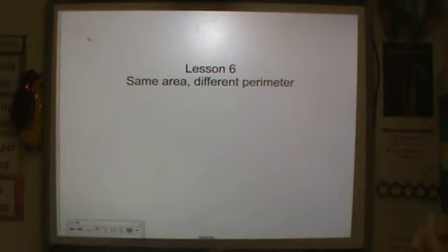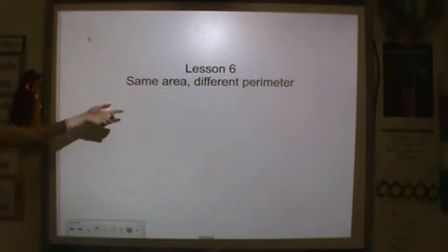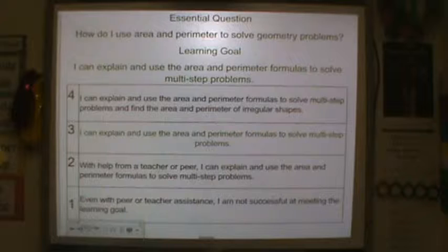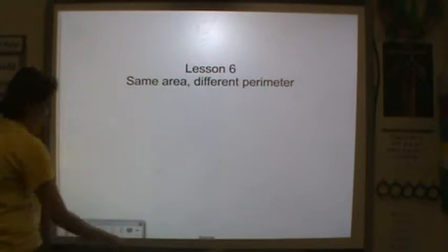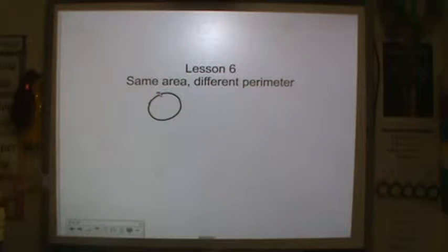All right, we're in lesson six, same area, different perimeter. So we're going to be talking about shapes that have the same area, but their perimeter is different. Before we go any further, please look at the learning goal and rate yourself. You should be used to this by now. At the beginning of the lesson, after you've rated yourself, put your rating inside of a circle at the beginning of the lesson next to the title, please.